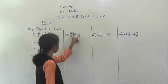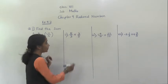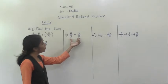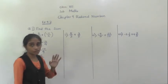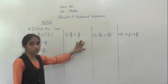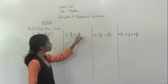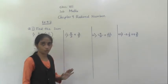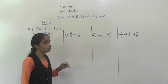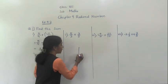Now let's solve the next example: 5 upon 3 plus 3 upon 5. If you observe this example, the denominators are not same, denominators are different. So what we have to do here? We have to make them same. We cannot just add 5 plus 3 and 3 plus 5. We have to make the denominator same and then add the numerators. How? By finding LCM.